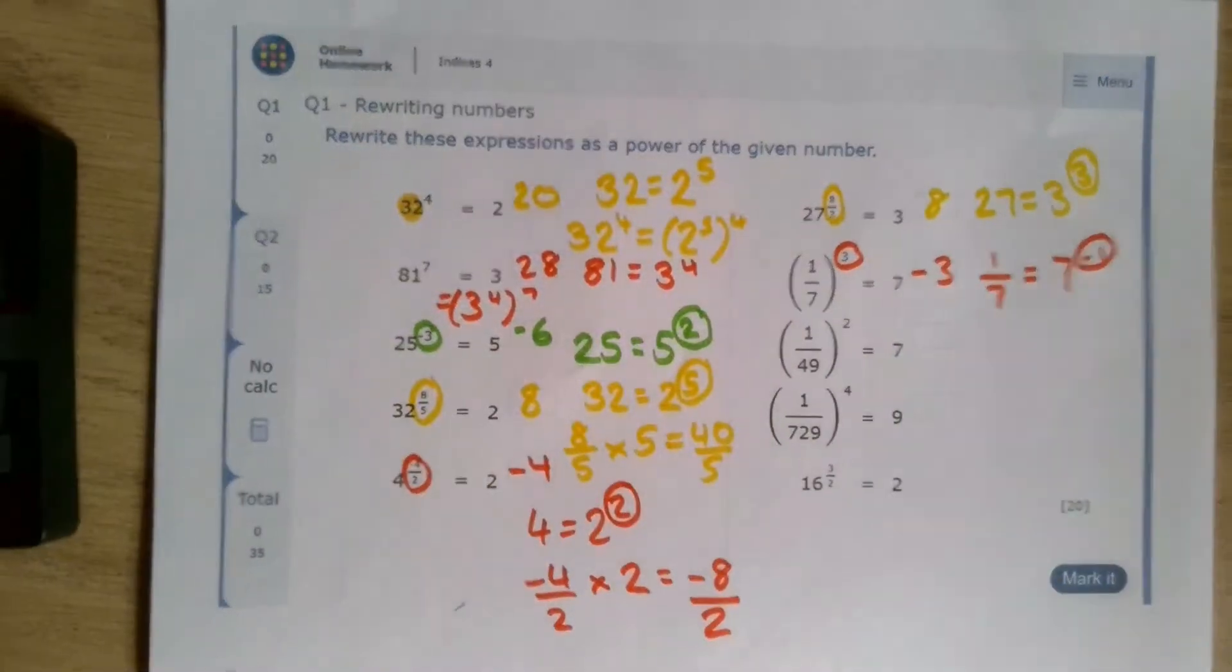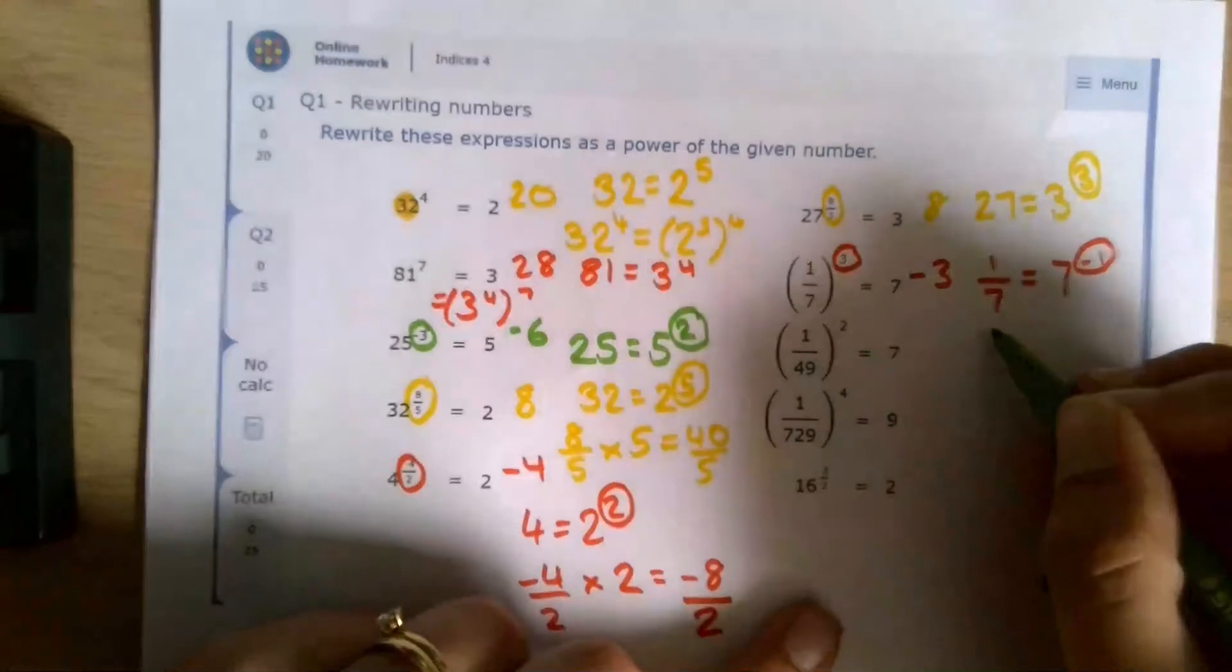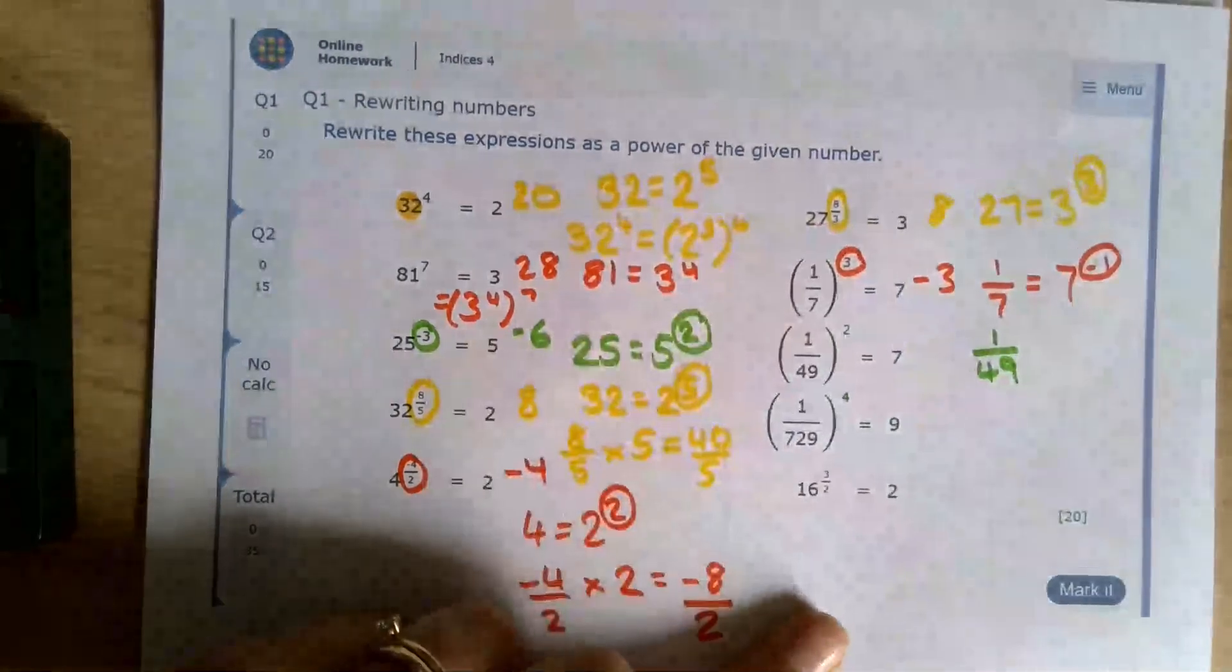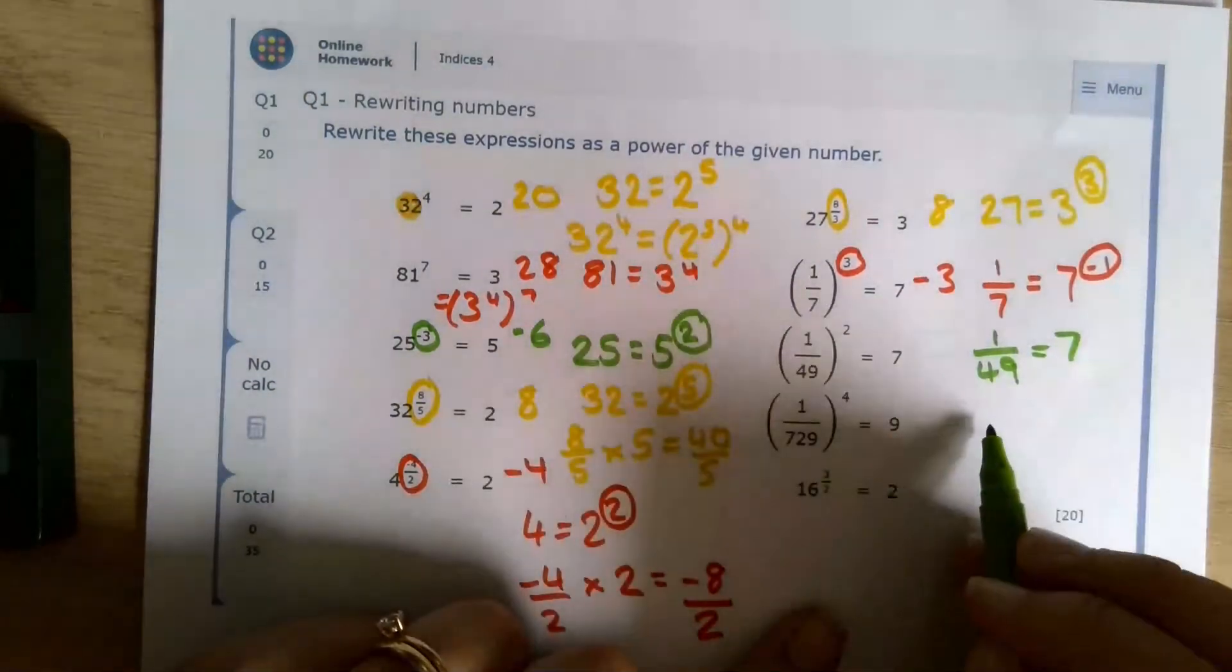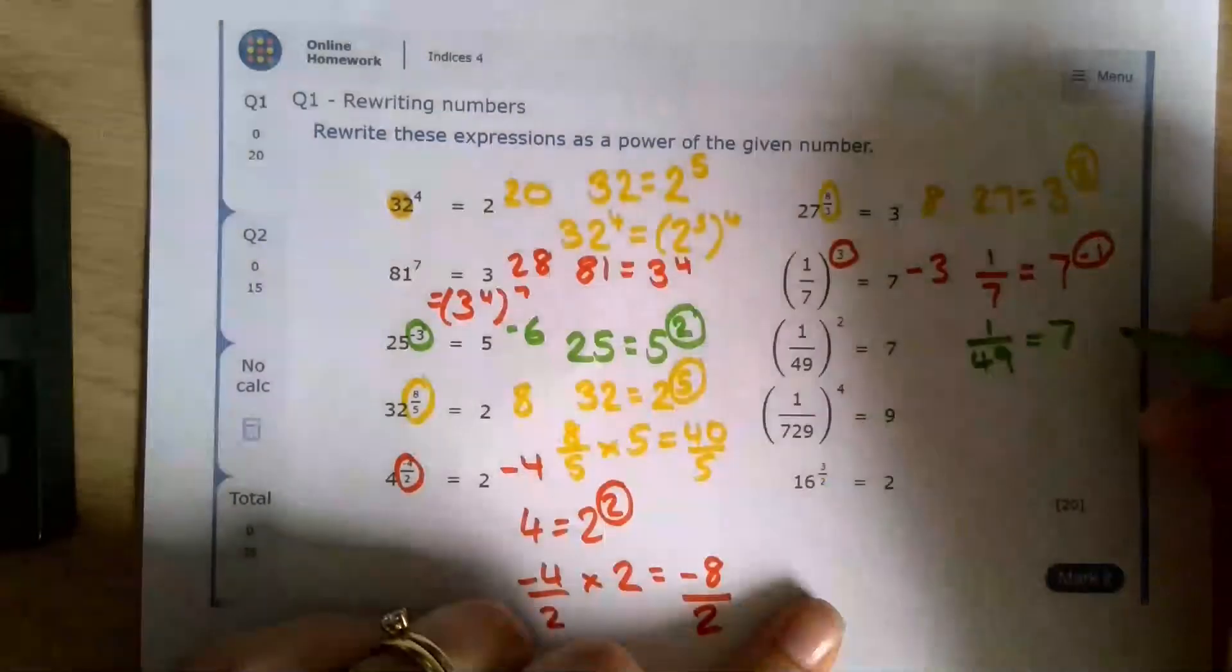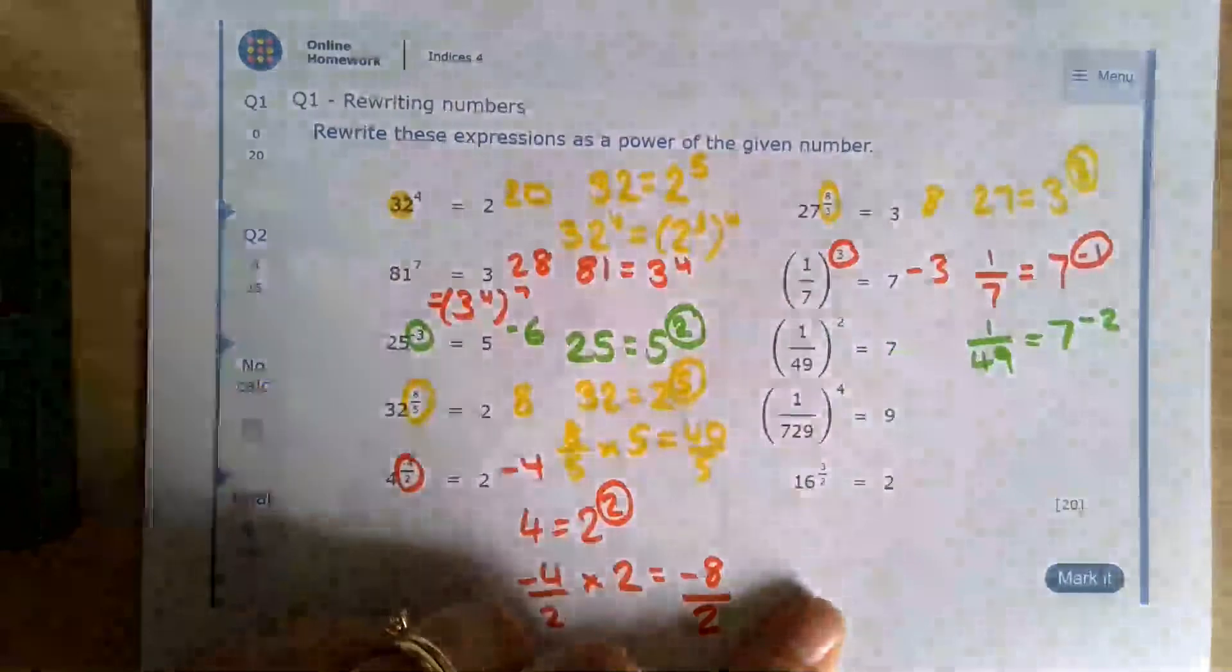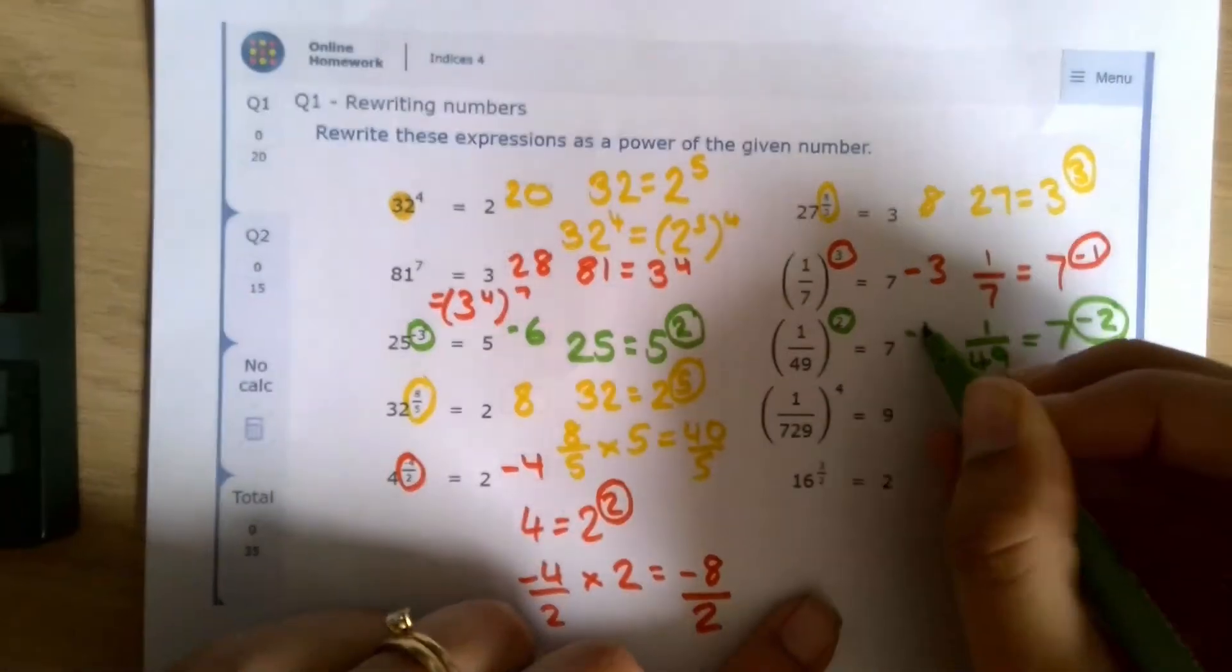So we've got another 7 one here. 49, 1 over 49 rather. So that's going to be 7 to the power of what? Well, it's negative because it's a reciprocal power, 1 over, and then 49 is squared, negative 2. So I'm going to multiply this power here by this power here, negative 4.